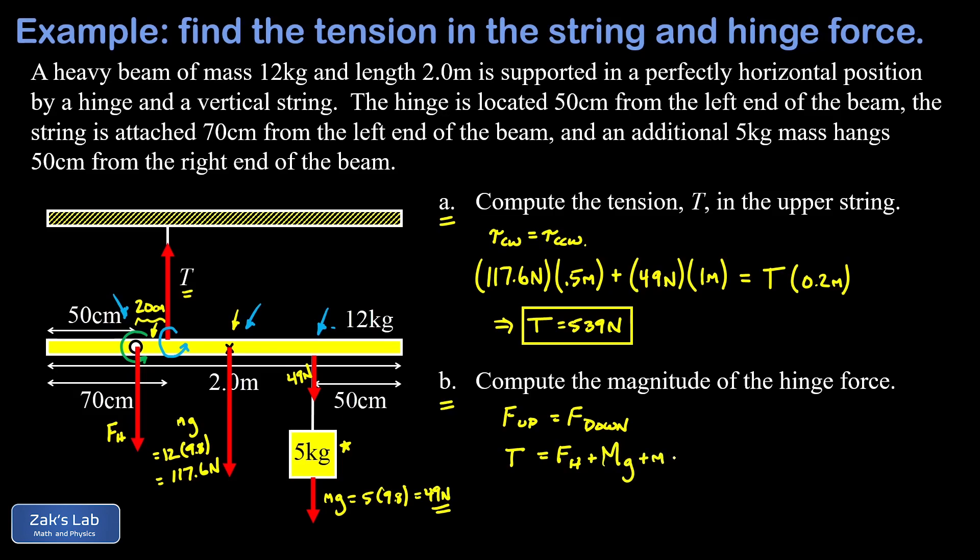So plugging in the numbers here we have 539 Newtons for the tension, our unknown hinge force, a force of 117.6 Newtons pointing down on the center of mass of the beam and a force of 49 Newtons pointing down on that five kilogram hanging mass. So we solve for the hinge force and to three significant digits we get 372 Newtons and we're done.